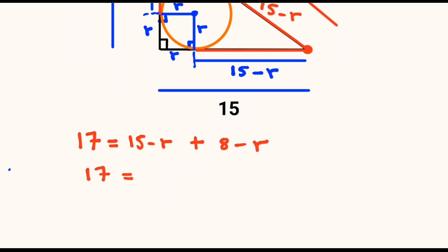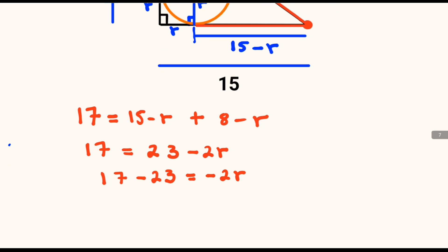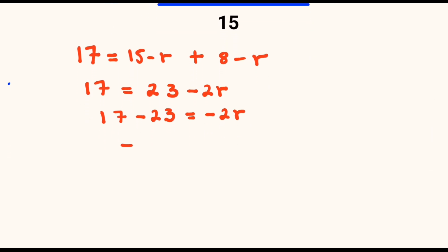We have 17, which will be equal to 15 plus 8, which is 23, and we have negative r minus r, which is negative 2r. Taking 23 to the left, it changes sign to negative 23, giving us 17 minus 23 equals negative 6, which is equal to negative 2r. Dividing both sides by negative 2, our r will be equal to negative 6 divided by negative 2, which is equal to 3.